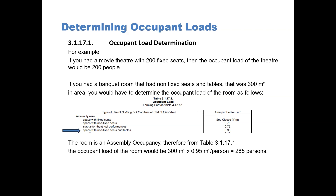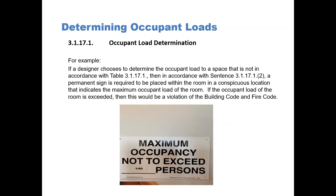This gives you a value of 285 persons, so this banquet hall would be able to hold, in accordance with Table 3.1.17.1, 285 persons. Another example is where a designer chooses to determine the occupant load to a space that is not in accordance with Table 3.1.17.1, as permitted in the article. As per sentence 3.1.17(2), a permanent sign is required to be placed within the room in a conspicuous location indicating the maximum occupant load of the room. If the occupant load of the room is exceeded at any time, this would be a violation of the building code and the fire code.